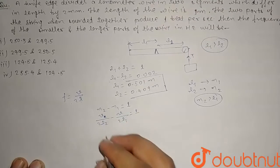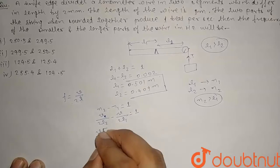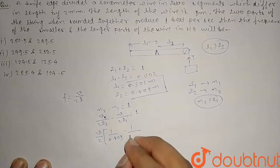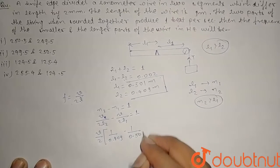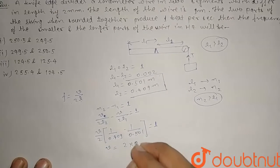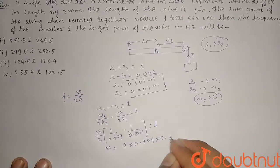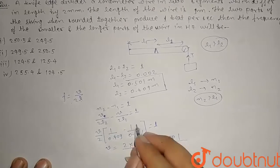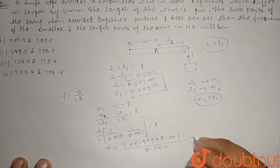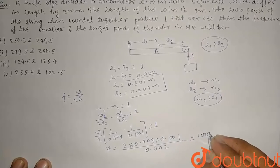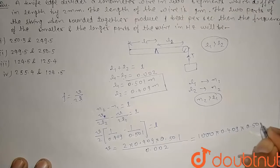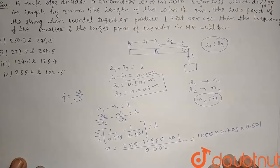Dekhiye yahan se v ki kya value mil jayegi. L2 or L1 ki value put kar dete hain. V by 2 ko bahar kheench le, agar 1 by L2 ki value 1 by 0.499 minus 1 by 0.501 is equal to kya hoga guys 1 hoga. To yahan se v ki value mil jayegi. V is equal to 2 into 0.499 into 0.501 divided by yahan upar kya hoga, subtract hoga 0.501 minus 0.499 yaani 0.002. Yaani yeh value humein mil jayegi, finally yeh dekhiye isko hazaar bahar mein tabdeel kar dega yaani 1000 into 0.499 into 0.501. Yeh ho gayi velocity.